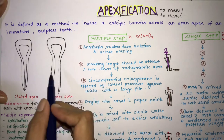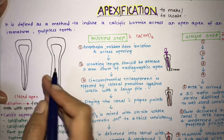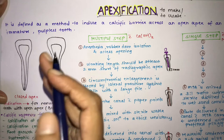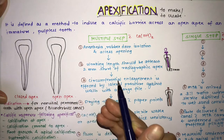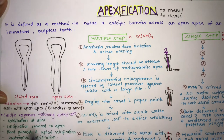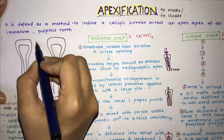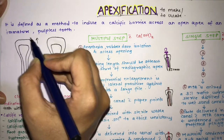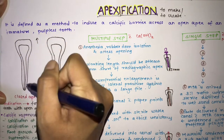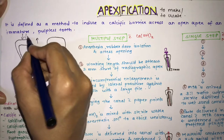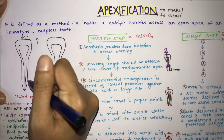We know the eruption sequence. For example, if your incisor is erupting at the age of seven to eight years, the tooth has erupted in the oral cavity but the root is not yet formed. It takes around two to three years more for the complete root formation. So if there's caries involving that tooth or if there's trauma, you have to go for root canal treatment.